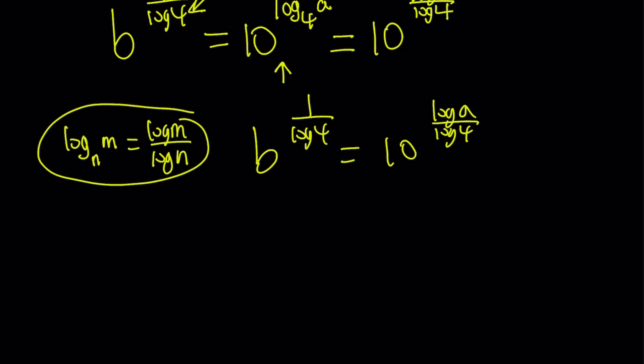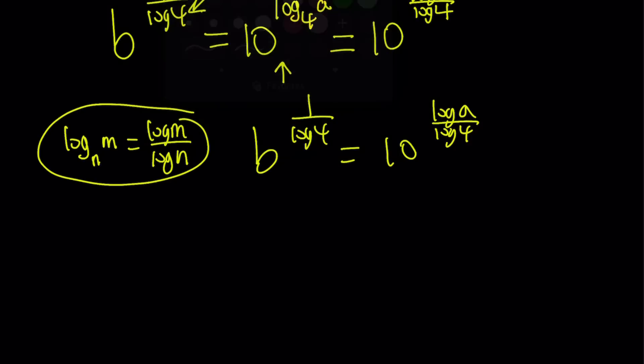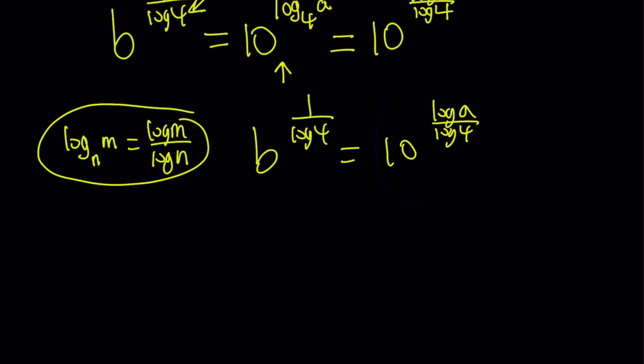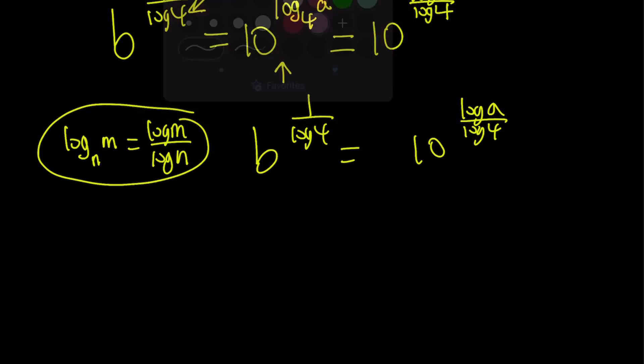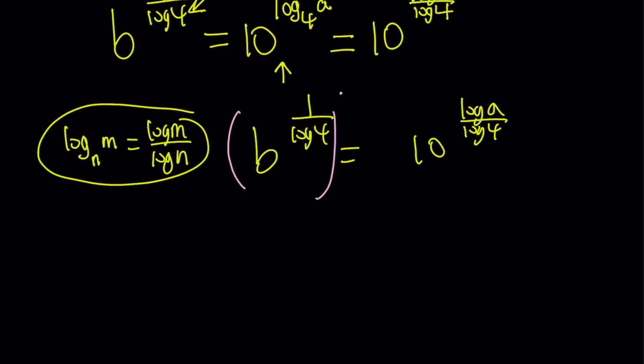So what does that mean? It means we can raise both sides, and I'd like to move this a little bit forward so that we can easily take the powers. So I'm going to go ahead and raise both sides to the power log 4. Log 4. And that does actually miracles, because log 4 is going to cancel out, log 4 is going to cancel out. We're going to come up with a very simple expression, which is nice. b equals 10 to the power log a.